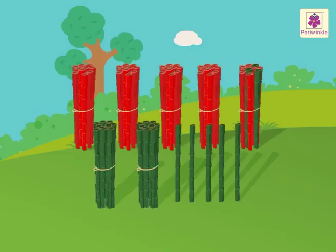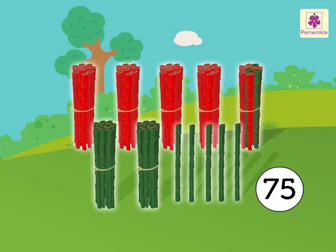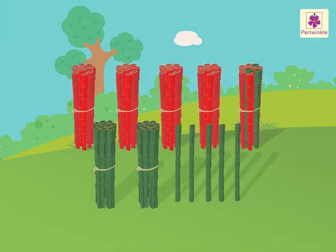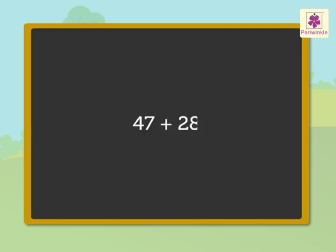Thus, we say that there are seventy-five bamboo sticks in all. Now, as you know, instead of counting the bamboo sticks, we can directly add the numbers forty-seven and twenty-eight. Let's look at the process of addition of these numbers.